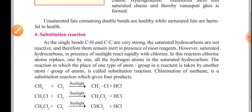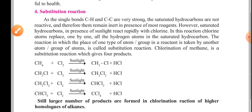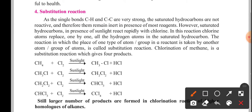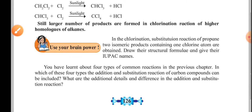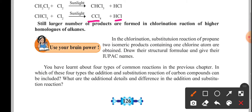Further is the substitution reaction. Here the example of methane with Cl2 (chlorine gas) in the presence of sunlight is taken. Chlorine replaces one of the hydrogen atoms in methane, forming hydrochloric acid. If the reaction continues further, at the end we get CCl4 (carbon tetrachloride) with hydrogen chloride liberated at each step.